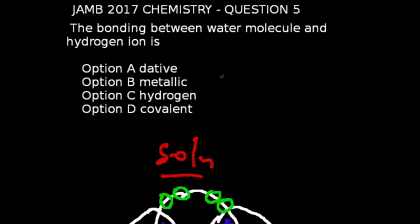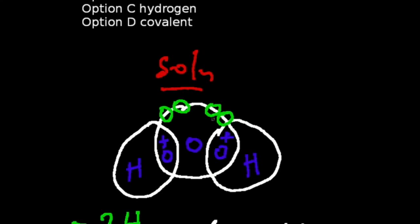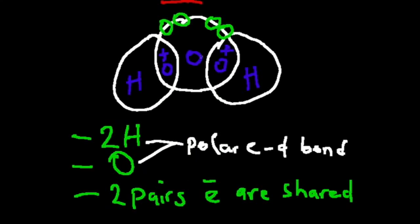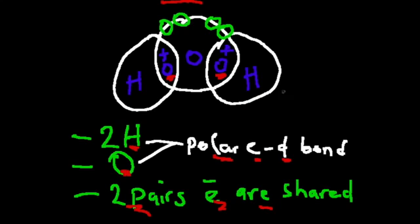Question 5, JAM 2017 chemistry. The bonding between a water molecule and a hydrogen ion. The first thing to know is the configuration of the water molecule, which consists of two hydrogen atoms and one oxygen atom bonded together in a polar covalent dative bond. For water molecule binding with a hydrogen ion, two pairs of electrons are shared, as seen here, and that makes it a dative bond.